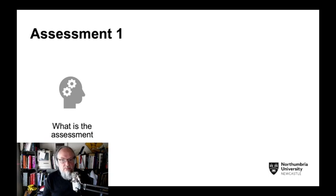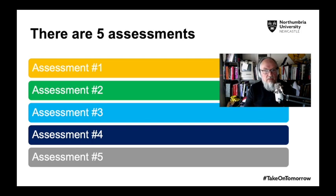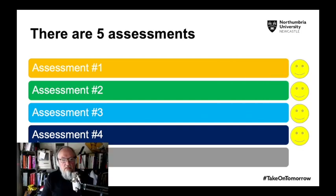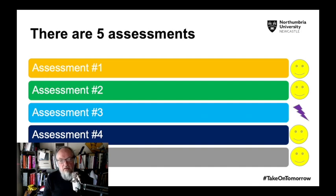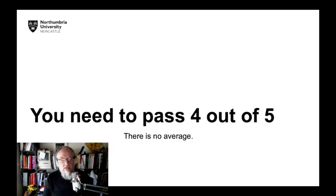What is the assessment? In this course, there are five assessments. They're numbered one to five. In order to pass the course, you must pass four of them, and it doesn't matter which four you pass. So you can pass the first four and not bother doing the fifth. If you have an illness or a problem during number three, don't worry — you can still pass number five. You need to pass four out of five. There is no averaging going on. Each assessment has a pass or fail mark of 40%, which is standard across the university.